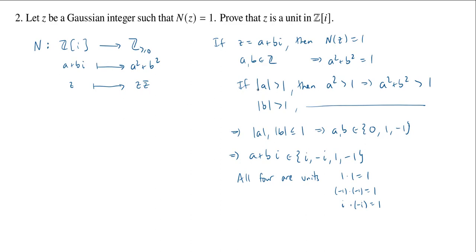So there we go. If z is of the form a plus bi, then we know a squared plus b squared is 1. That allows us to very explicitly say what the possibilities for z are, and all of them are units.